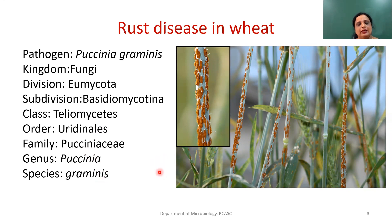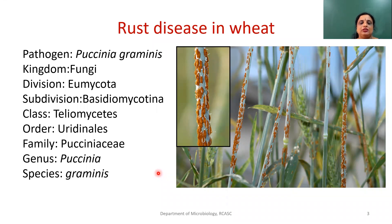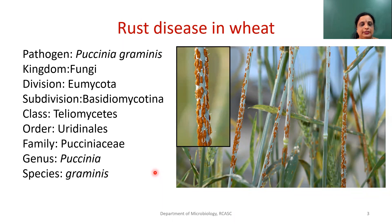Where do you find this disease? It is found all over the world, wherever wheat is grown extensively, if proper measures have not been followed. Another important point: this is one of the airborne diseases. Plant diseases can be classified based on transmission as airborne, soil-borne, and seed-borne. Since dissemination of the spore happens through air, Puccinia is an airborne disease.